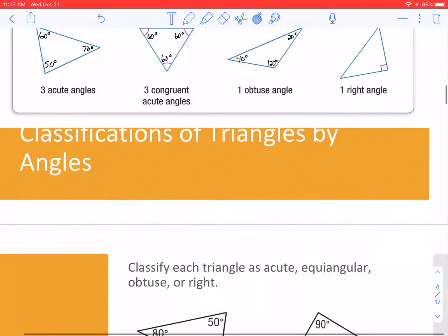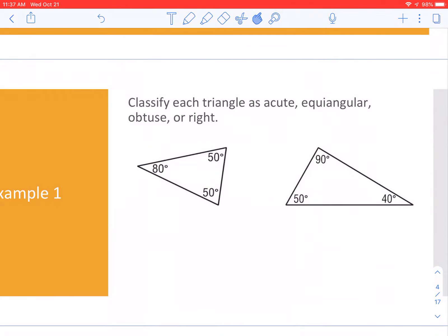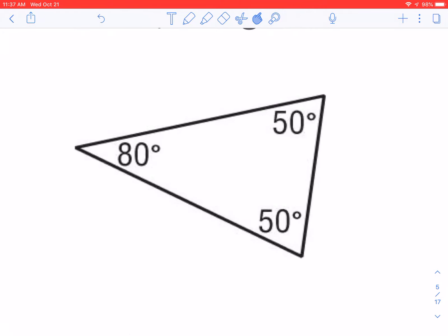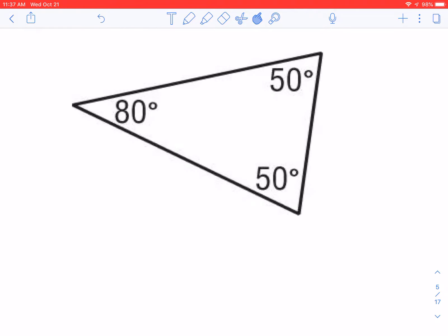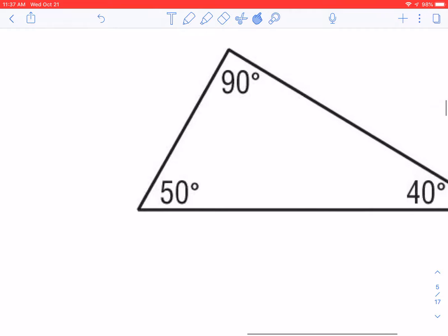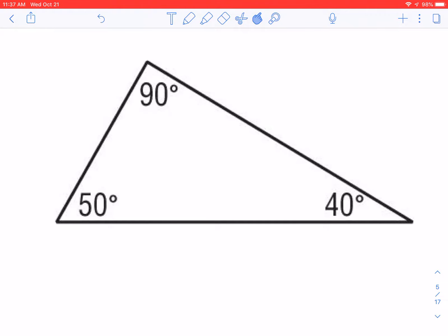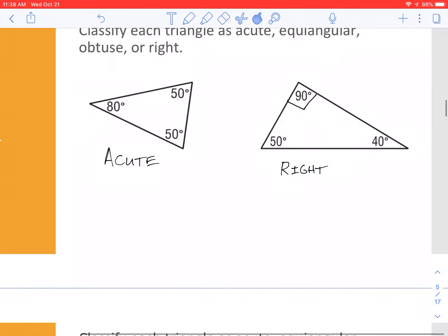Let's practice. Classify each triangle as acute, equiangular, obtuse, or right. If I look at this triangle here, each angle is less than 90. So I can call this an acute triangle. Moving over to this one, I have 50 and 40. Those are both acute. But I have a 90, which is, if I draw my square, a right angle. So we would call this a right triangle.